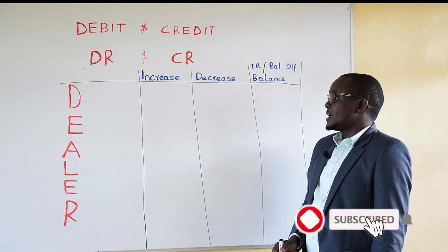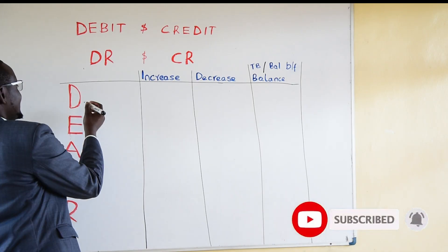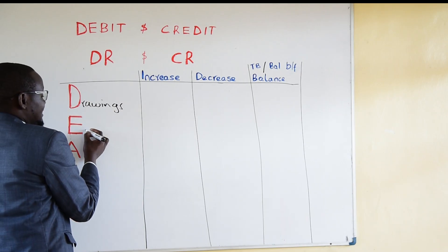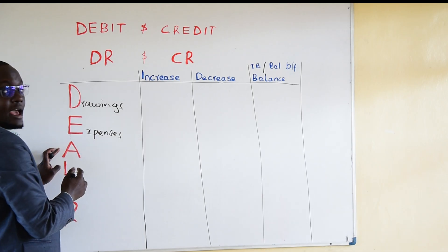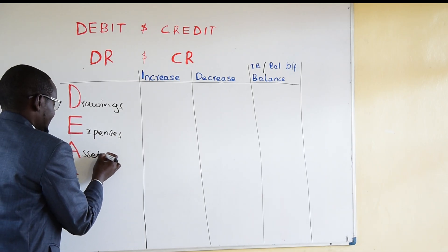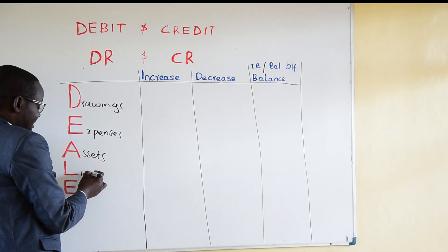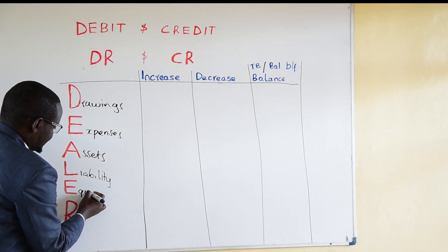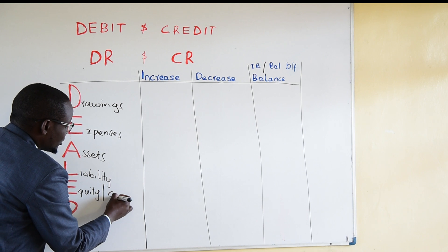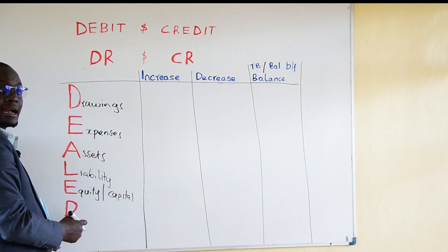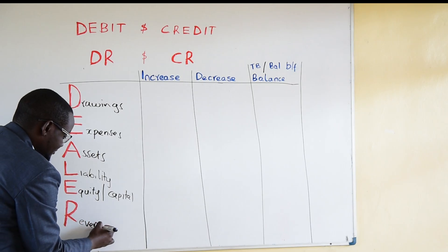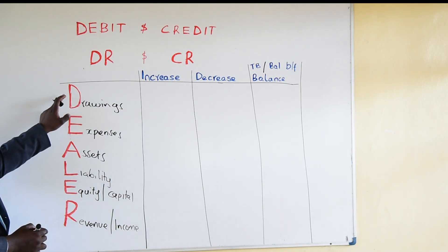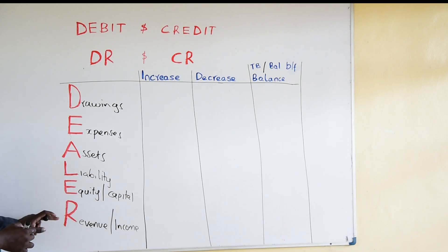In my DEALER acronym: D represents drawings, E represents expenses, A represents assets, L represents liability, E represents equity — which is also called capital — and R represents revenue, which is also called income. This is what I refer to as my dealer analysis.